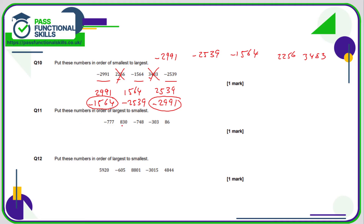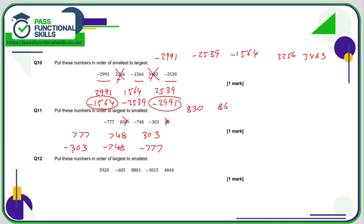Question 11: largest to smallest. The largest is going to be the positive number with three digits — so 830, followed by 86. For the negatives, treat them as positive: 777, 748, 303 — already in order largest to smallest as positives. As negative numbers it's the opposite, so the order becomes minus 303, minus 748, minus 777. Minus 303 is larger than minus 748 because it's less negative, and minus 748 is larger than minus 777 for the same reason.